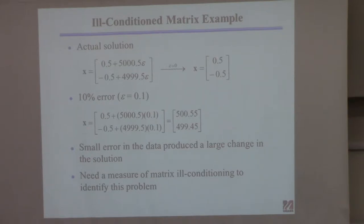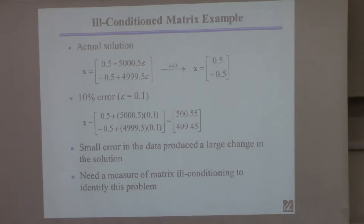A small error in the data induced a huge change in the solution, and this is a problem. We would like to know when this is a problem before we do this, because if this is something you weren't paying attention to, maybe you would use this solution, and that would not be a good idea. So we want some way of characterizing when a problem is going to be ill-conditioned.